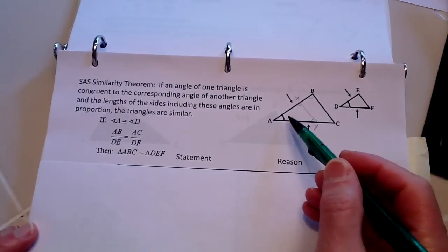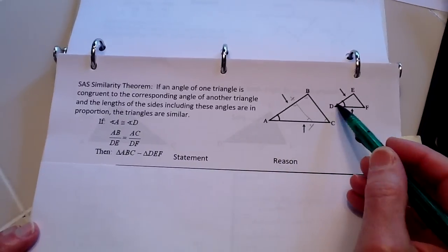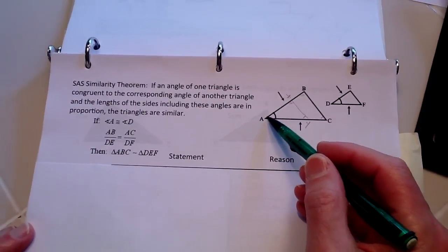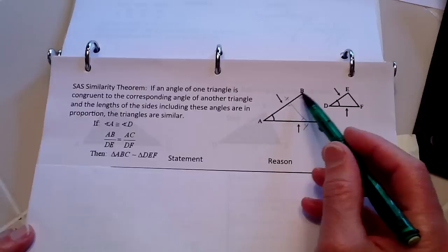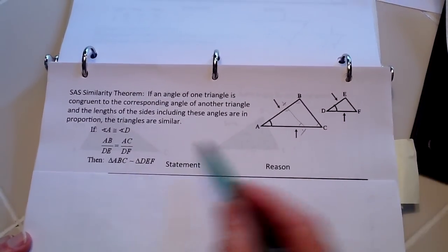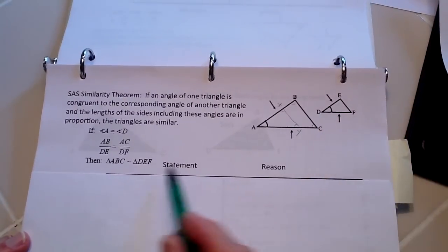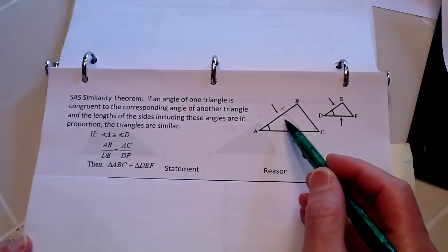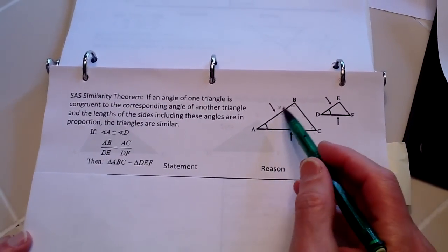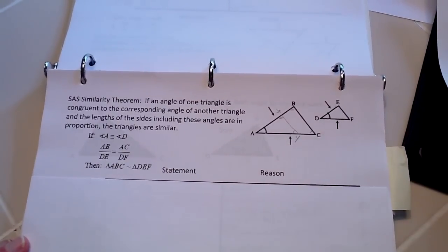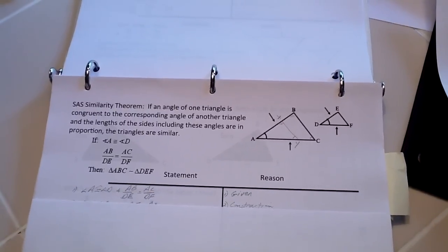What that means is that this angle here, A and D, which are congruent to each other, therefore AB to DE is the same as AC to DF. And you notice that these are the included angles, so you have side-angle-side. And what we're going to do is prove that those are similar.